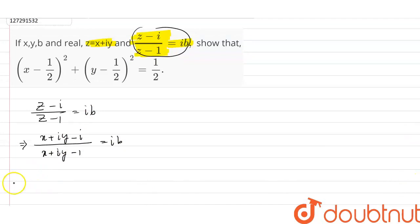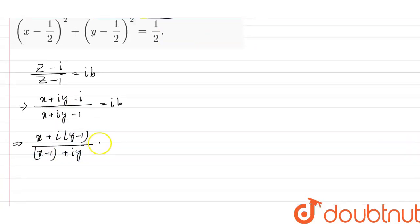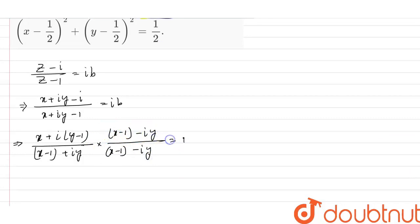This time we will take the real part. So x plus iy minus 1: the real part is x minus 1 and the imaginary part is iy. We will do the conjugate — so x minus 1 minus iy. The real part is x minus 1 minus iy, and this is equal to ib.